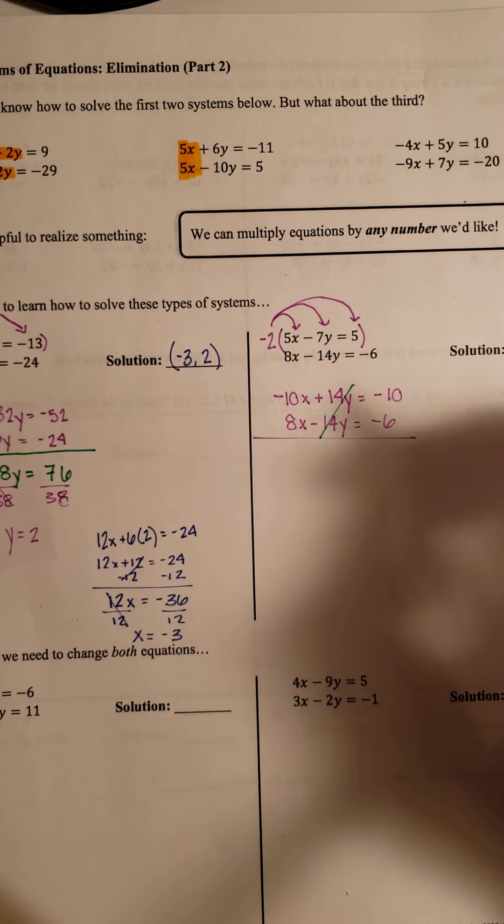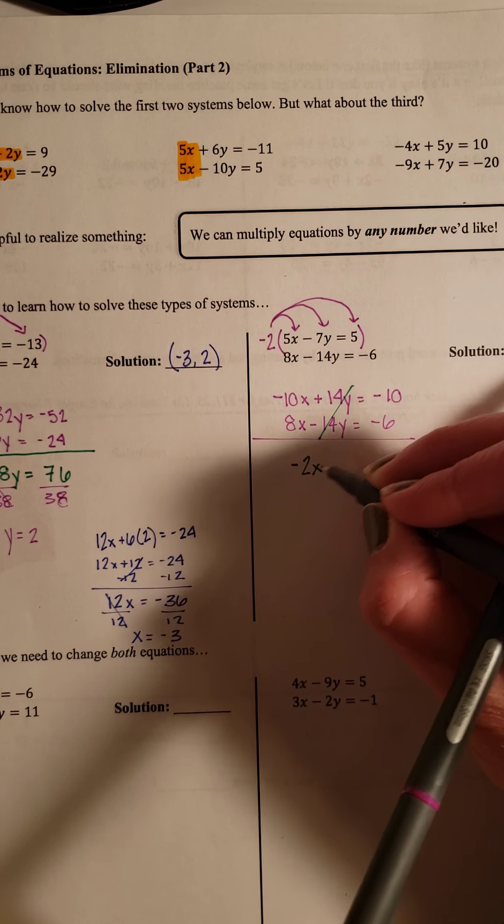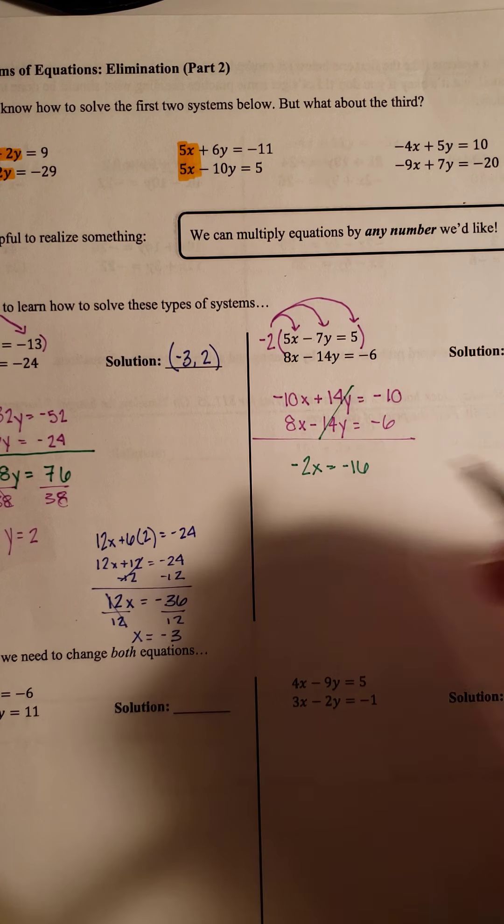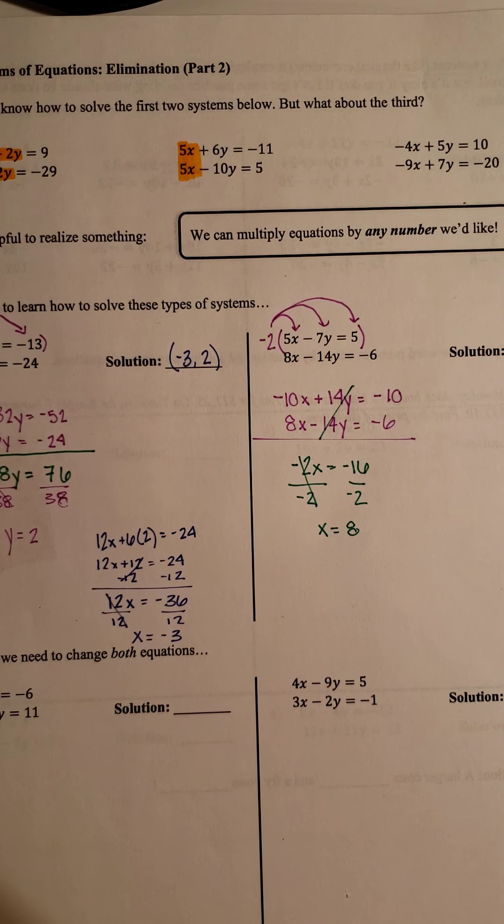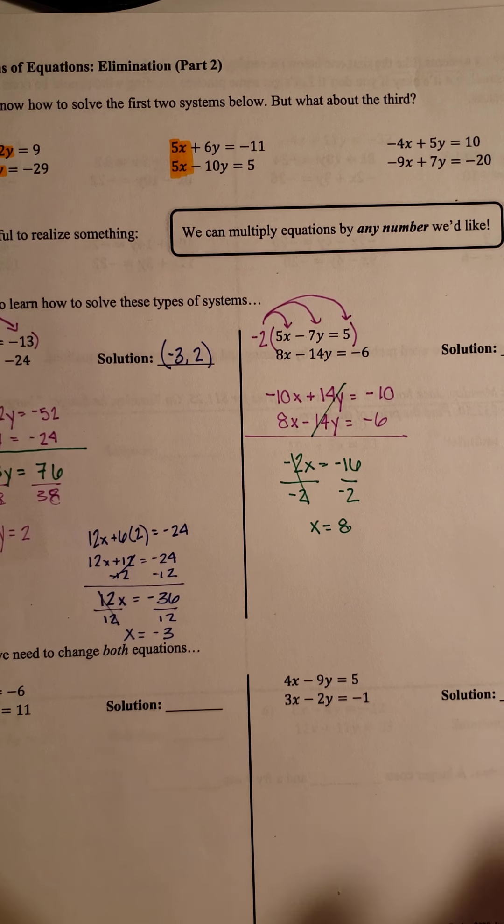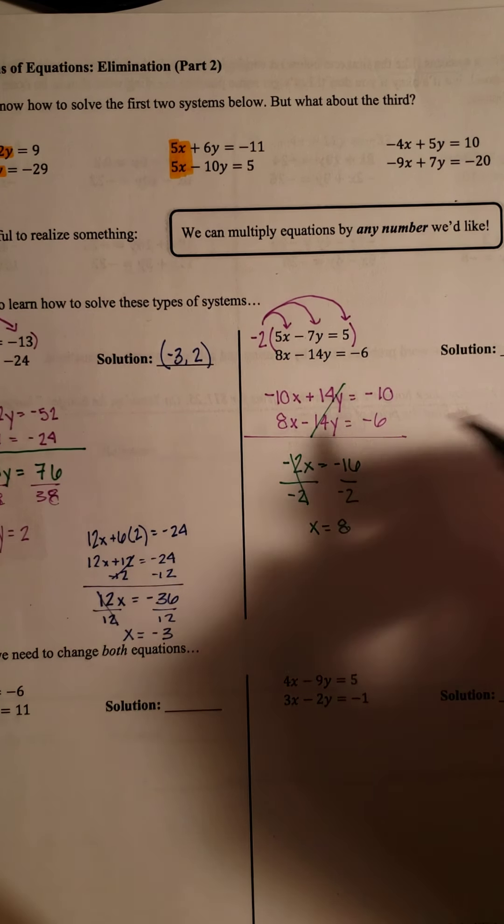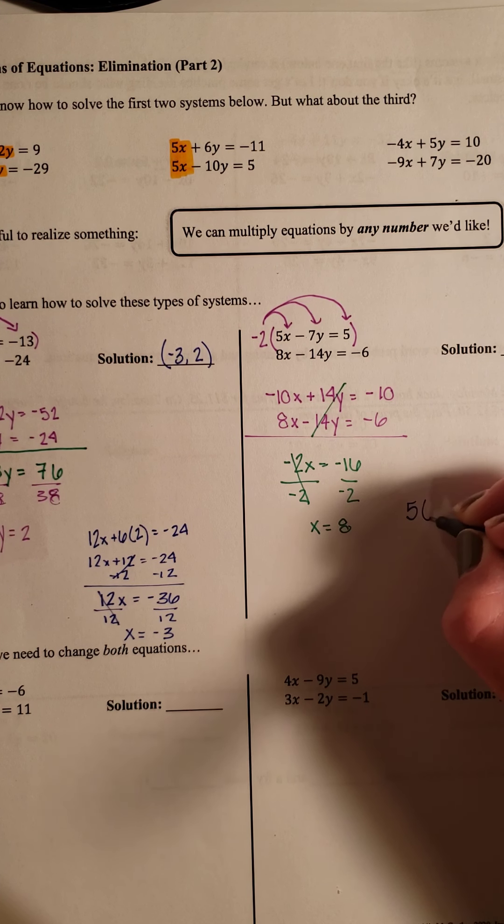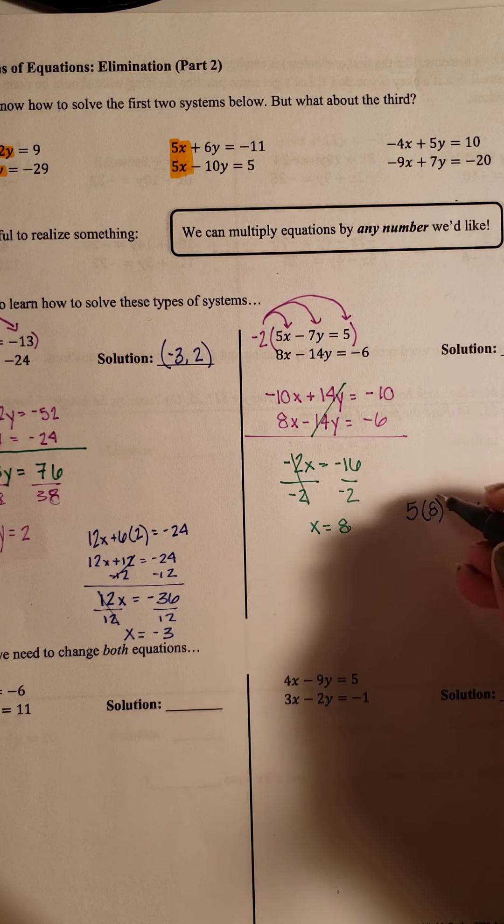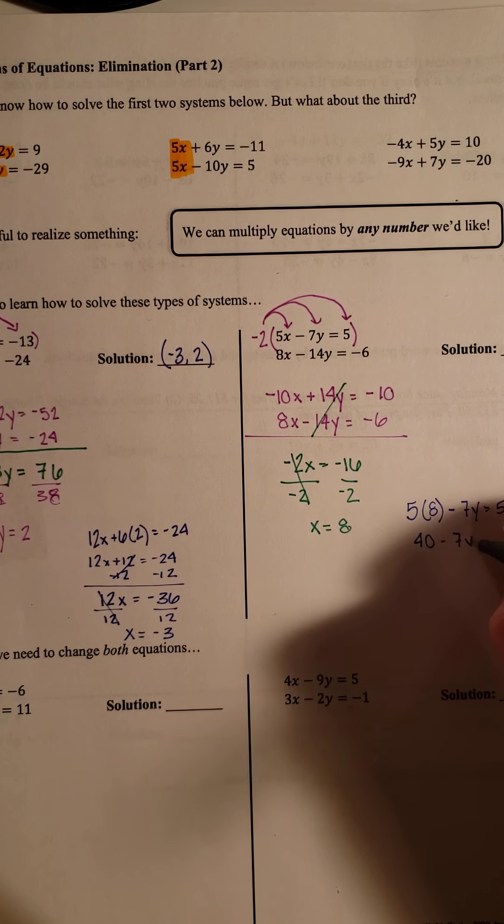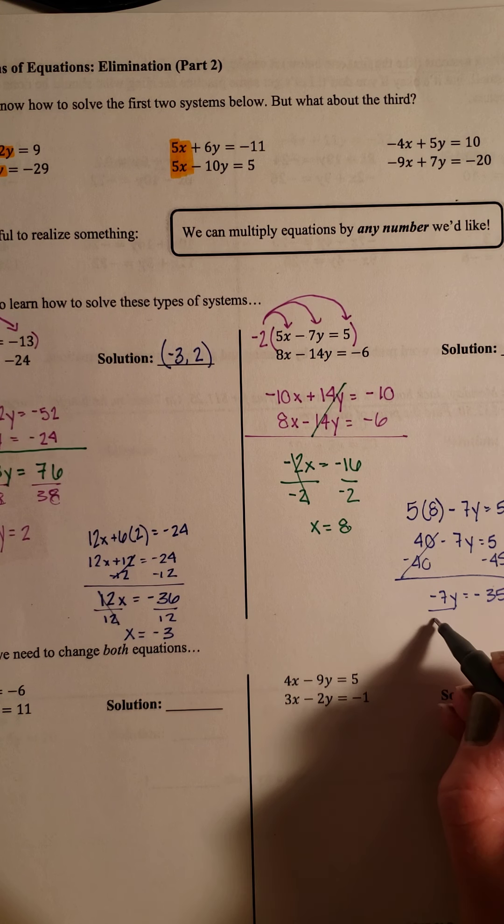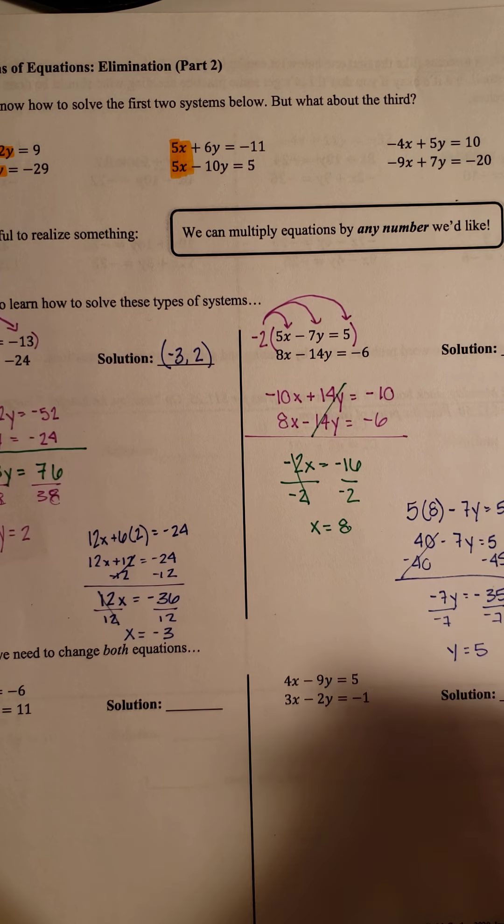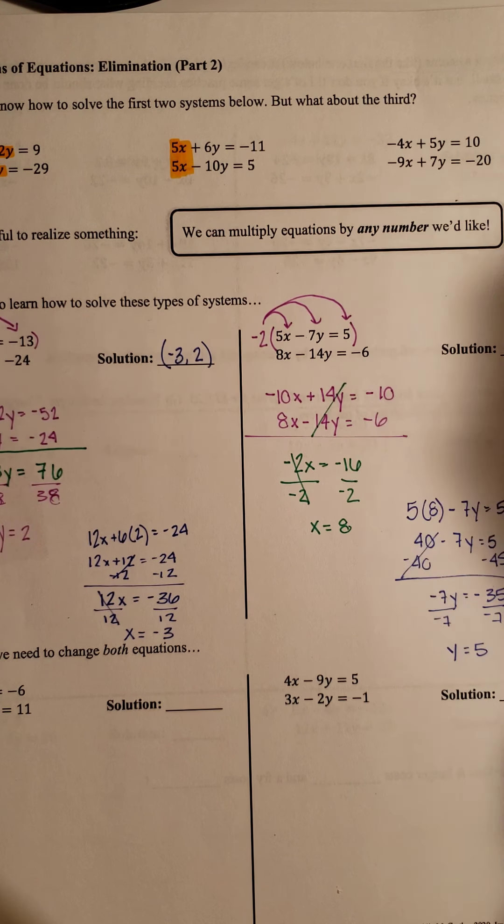Then I need to combine them. These cancel like we want. -10, positive 8 gives us a -2X. This gives me a -16. Divide by -2. X equals positive 8. Then I'm going to go back to one of my original equations. Does not matter which one, and put that in. So I'm going to do the top equation just because it's smaller numbers. 5 times 8, we can do that and get 40. Move the 40 to the other side. -7Y = -35. Divide by -7. Y = positive 5. So your solution is (8, 5).